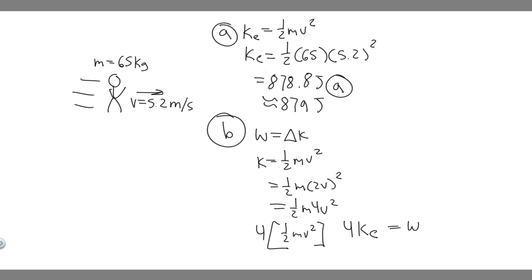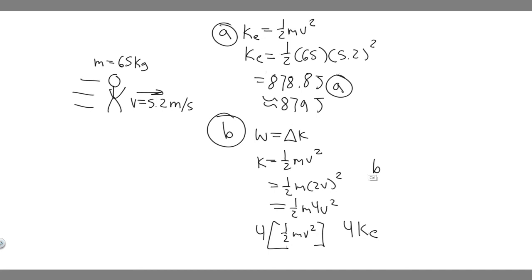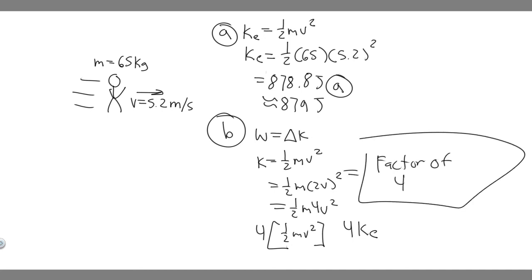If we want to double the speed, we have to multiply the kinetic energy by 4 — by a factor of 4. So you have to multiply the work by a factor of 4 if you want to double your speed. That's your answer to Part B: a factor of 4. This was your answer to Part A, and hopefully you found this useful. Thank you.